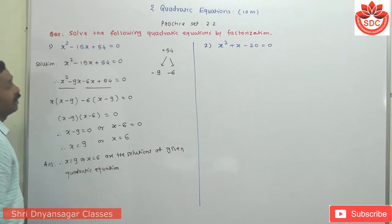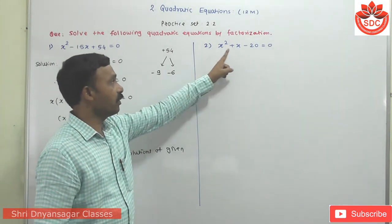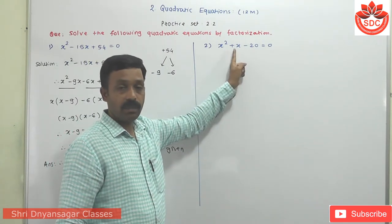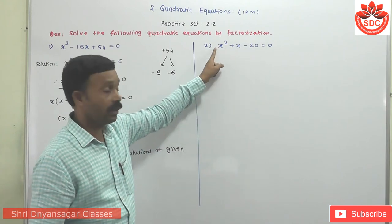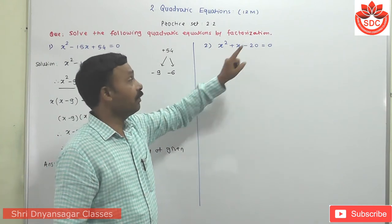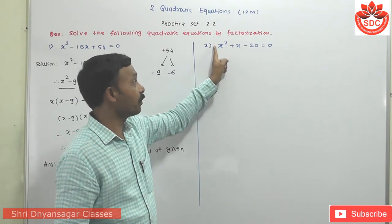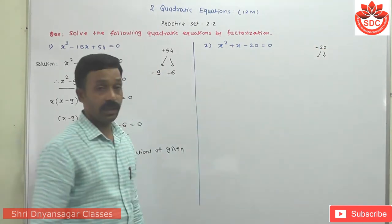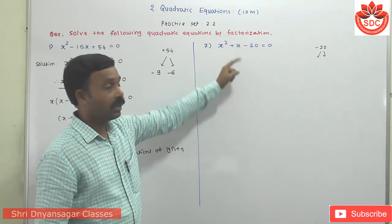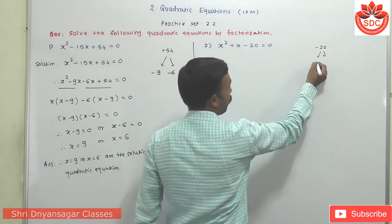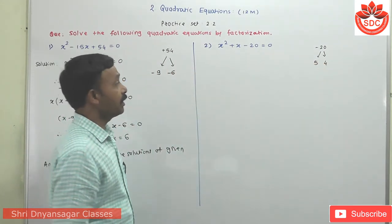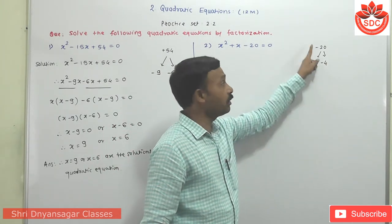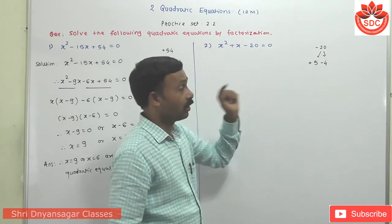Can you understand the first question? Then we take the second question: X² + X - 20 = 0. This is in standard form AX² + BX + C = 0 where A = 1, B = 1, and C = -20. Find the product of A and C: 1 × (-20) = -20. Find factors of -20 such that their addition is +1.